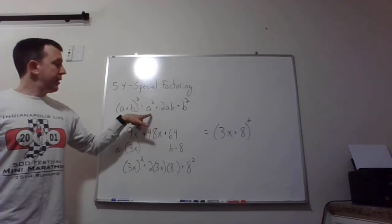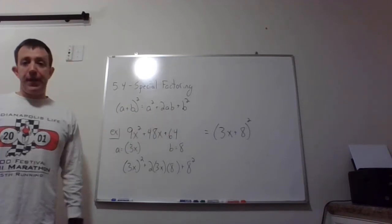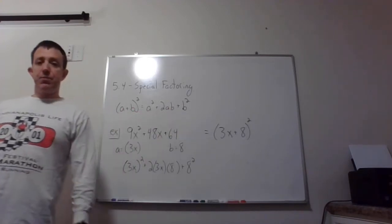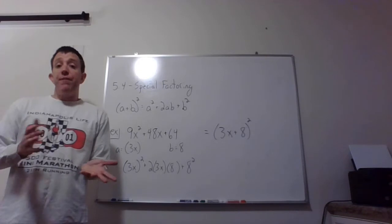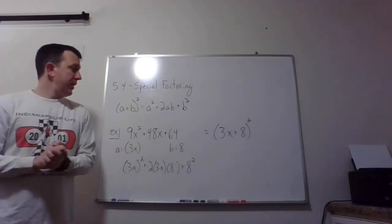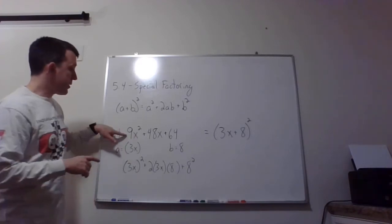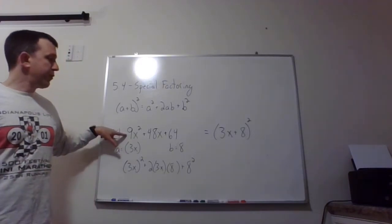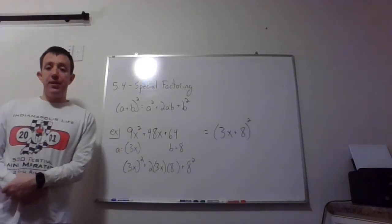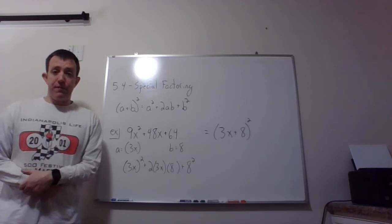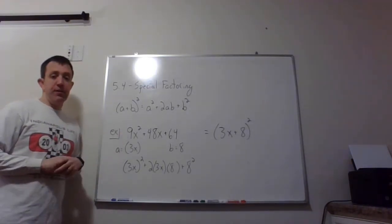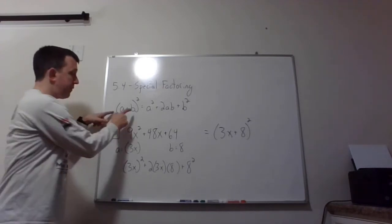A plus b squared is equal to a squared plus 2ab plus b squared. So here since we're factoring, we're going to be doing this process in reverse. And what's nice about these is, here's my example: 9x squared plus 48x plus 64. You could factor this exactly the same way that we did the stuff back in section 5.3.